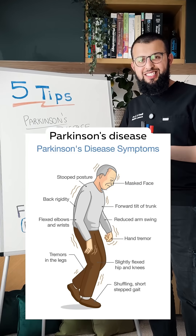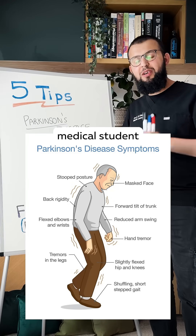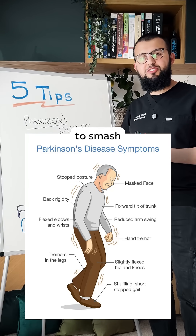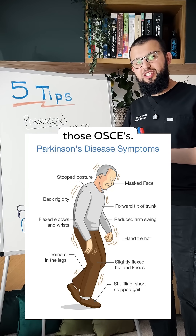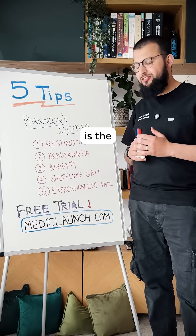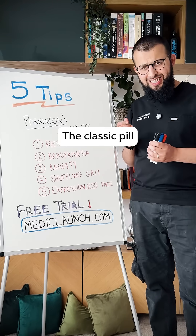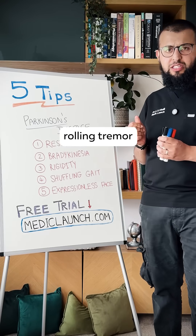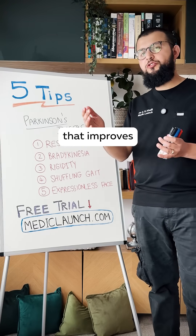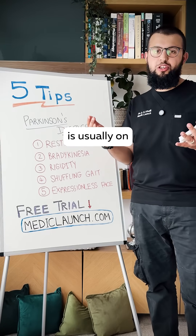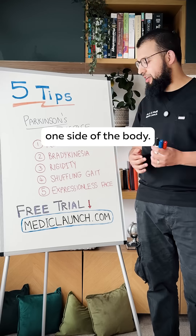Five tips on Parkinson's disease that every medical student must know to smash those OSCEs. Number one is the resting tremor — the classic pill-rolling tremor that improves with movement, usually on one side of the body.